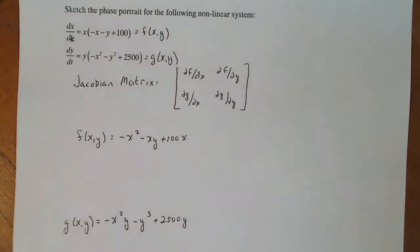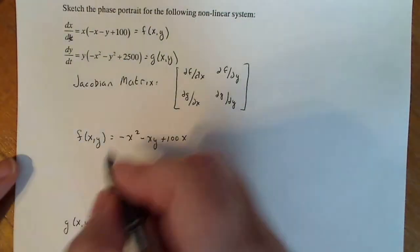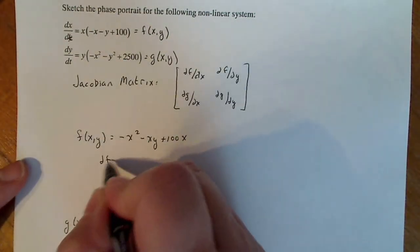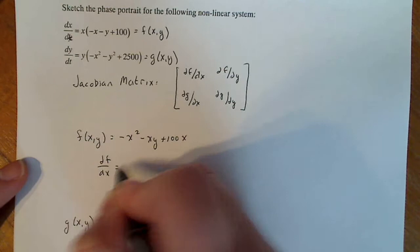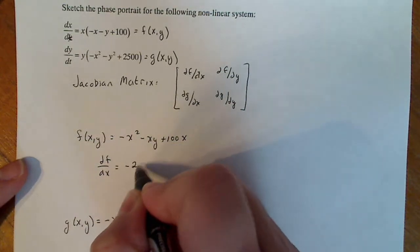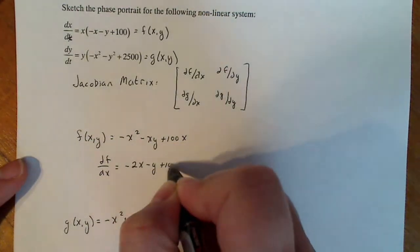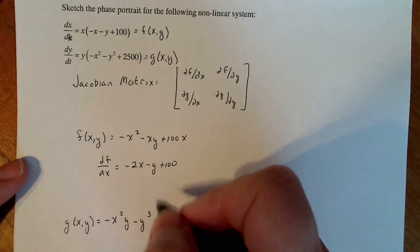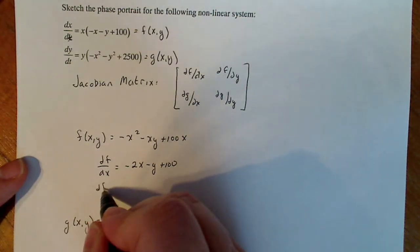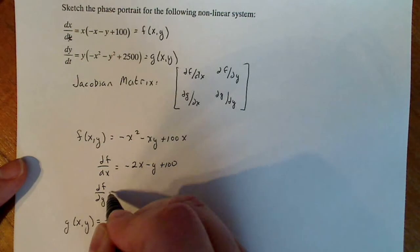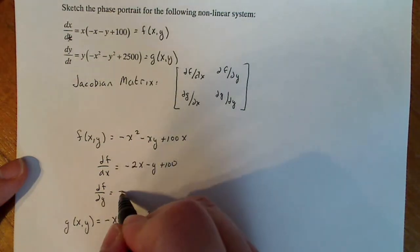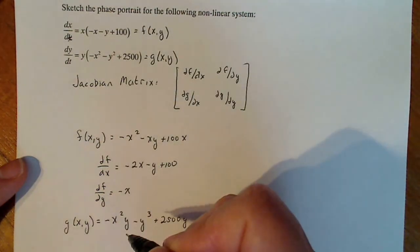Now to do this right, you just got to be really particular when you do your derivatives. So the partial of F with respect to X turns out to be minus 2X minus Y plus 100. The partial of F with respect to Y is equal to minus X, that's it.